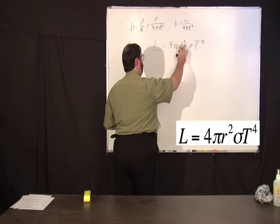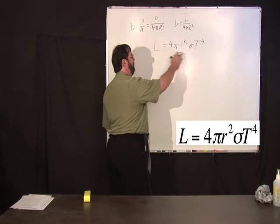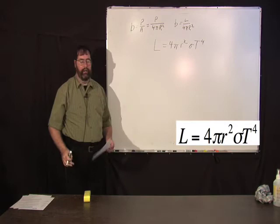so this is the surface area of the star, and this is basically the power per unit area radiated by the star. So you can do lots of things with this